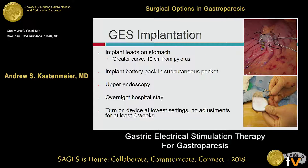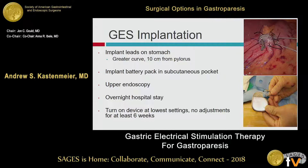How do we implant it? It's generally done laparoscopically. There are two leads implanted on the greater curve, 10 centimeters from the pylorus, one centimeter apart. The battery pack is implanted in a subcutaneous pocket. An upper endoscopy is performed to make sure the mucosa hasn't been violated. For us it's usually an overnight hospital stay. The device is turned on at the time of surgery on the lowest settings, and we generally don't do any adjustments for six weeks, allowing for post-operative recovery before managing the device.